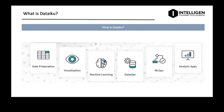DataIQ projects are the central place for all work and collaboration for users, and each project has a visual flow including the pipeline of data sets and recipes associated with the project. DataIQ aims to slot itself in across the entire lifecycle of the statistical modeling process, all the way from data preparation to visualizing outputs, applying machine learning algorithms, and crucially being able to deploy the models and realize the value to your business.